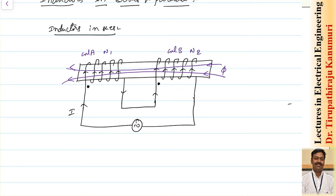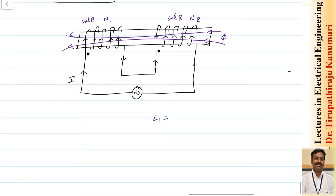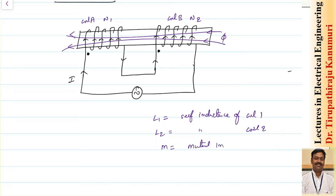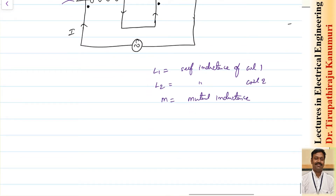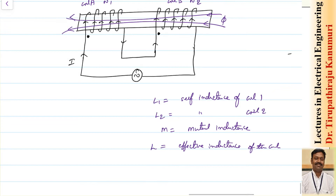Let the resultant magnetic flux produced be phi. Coil A (coil 1) has N1 turns and coil B has N2 turns. Let L1 be the self-inductance of coil 1, L2 be the self-inductance of coil 2, and M be the mutual inductance between them. We have already shown that M12 = M21 = M. The effective inductance L represents the total inductance considering both self and mutual inductance. Since current varies with time, flux also varies with time.